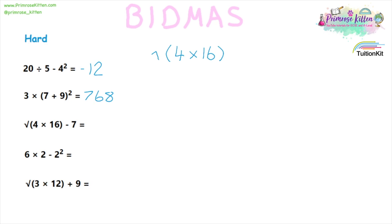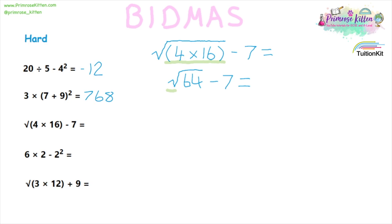Here we have the square root of four times 16, minus seven. The first thing we need to do is the bracket in the middle. So the first thing is four times 16 — if this is on a non-calculated paper you'll need long multiplication. This simplifies to the square root of 64 minus seven. Indices come next, and indices do include square roots. So we do the square root of 64. It will make your life much easier if you know all your square numbers and cube numbers, so you can identify that the square root of 64 is eight. Giving us a final sum of eight minus seven, and one as the answer.